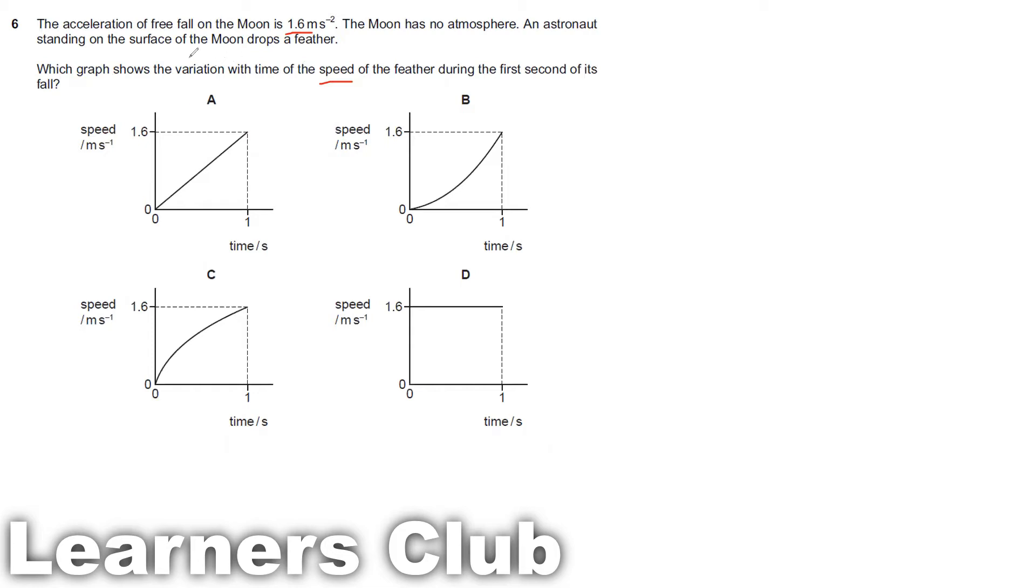So the question says the acceleration of free fall on the moon is 1.6 meter per second square. There is no atmosphere so there will be no air resistance. Now we need to find a speed time graph for this instance.